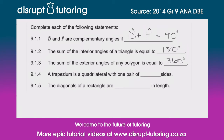Then a trapezium is a quadrilateral — a quadrilateral has four sides — with one pair of parallel sides. So you need to know those rules. Parallel sides.